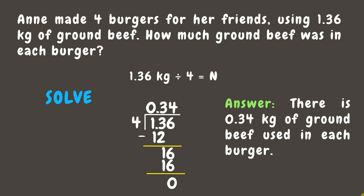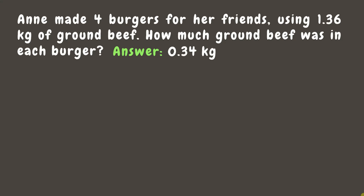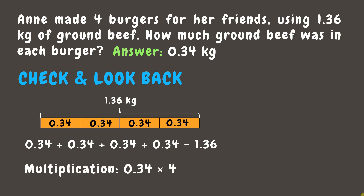Now let's go to our final step: Check and Look Back. This step is optional but helpful to check if our answer is correct. We may look back at our illustration and add the amount of beef in each burger, which totals 1.36kg, or simply multiply 0.34 by 4. Our answer is 1.36kg. Since it matches, this means our answer is correct.